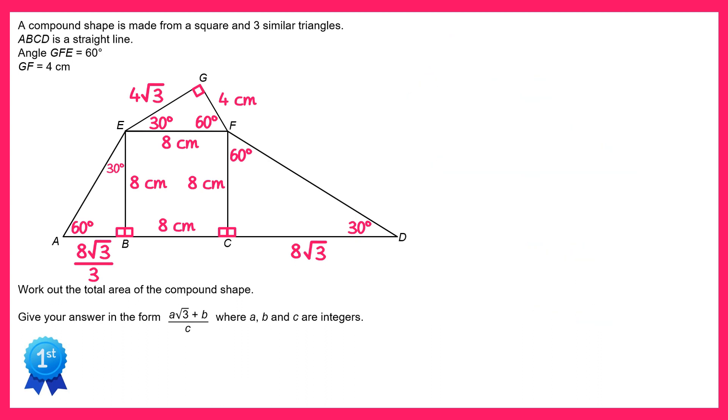We're now ready to calculate the area of the shape, which is what we've been asked to do in the question. Let's start with the square. So the square is side length 8, so it's just 8 times 8, which is 64.